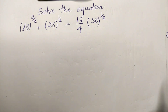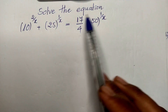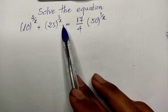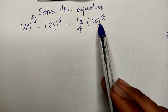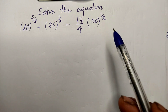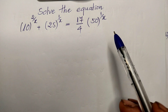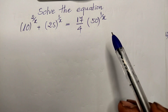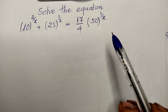Hello everyone, welcome to my YouTube channel. Today I have one exercise on paper. The equation we have is 10 power 2 divided by h, plus 25 power 1 divided by h, equals 17 divided by 4 multiplied by 50 power 1 divided by h. If you know how to solve this, please try it first, then come back to watch my video to verify your solution. Please don't forget to subscribe to my channel for more exciting videos. Now let's go to the solution together.